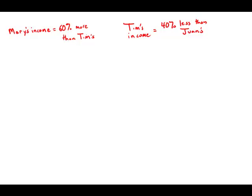Mary's income is 60% more than Tim's income, and Tim's income is 40% less than Juan's income. What percent of Juan's income is Mary's income?